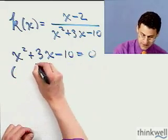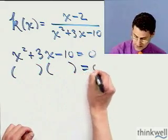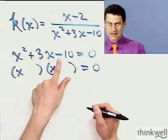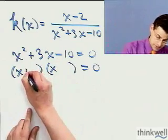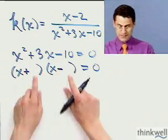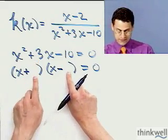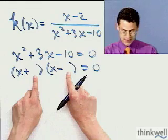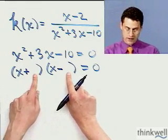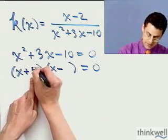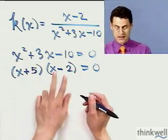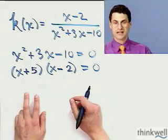And if I factor that, I'd have an x and an x. This negative sign means I'm going to have opposite signs here, so plus and a minus. They have to combine to give 10. I have to multiply to give 10 and combine to give 3 when I subtract them. That looks like a 5 and a 2 are going to work well, and I should put the 5 by the positive and a 2 here, and they combine to give me plus 3.